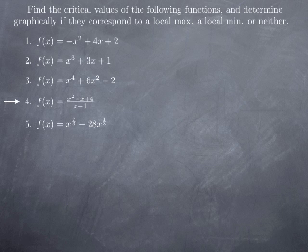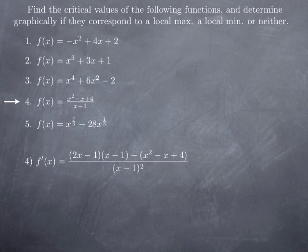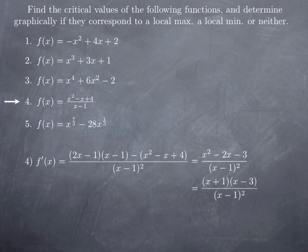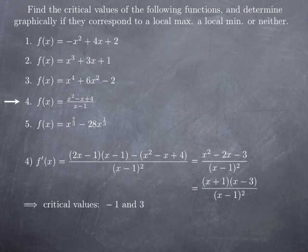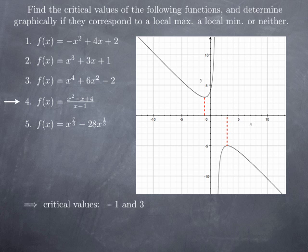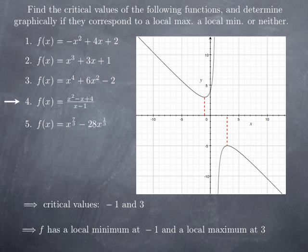For f(x) = (x²-x+4)/(x-1), using the quotient rule, we get the derivative simplifying to (x²-2x-3)/(x-1)², which factors as (x+1)(x-3)/(x-1)². So f'(x) = 0 at x = -1 or x = 3. Even though f' is not defined at x = 1, it is not a critical value because f itself is not defined at x = 1. If we sketch the graph, we see that at x = -1 we have a local minimum, and at x = 3 we have a local maximum.